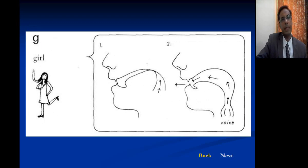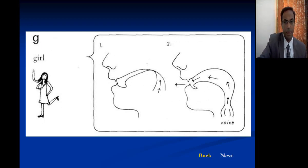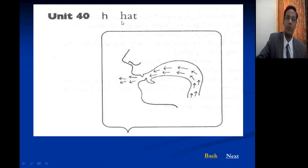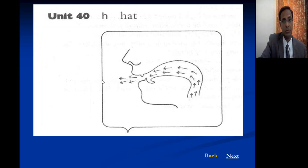The G sound is the voiced counterpart of K — it is velar and it is a stop or explosive sound. The H sound is a glottal sound because air escapes or passes through the glottis — it is a fricative sound.